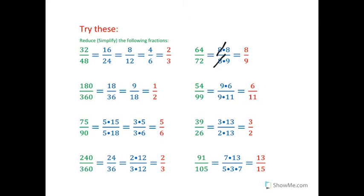180. I got rid of my 0's. 18 over 36. Cut it in half. 9 over 18. At that point I said, oh, that's equal to a half.